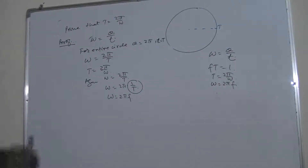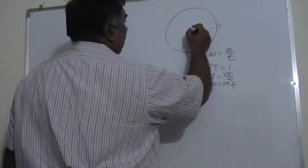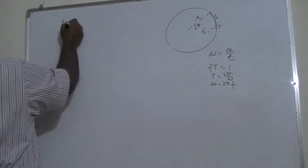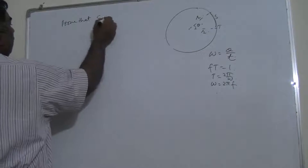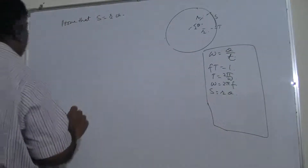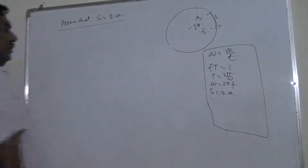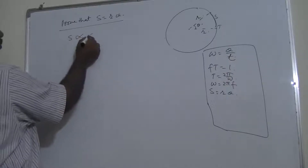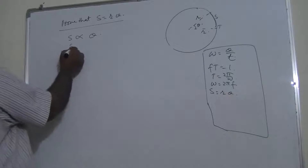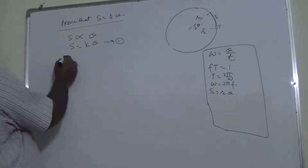Another formula examiners may ask you to prove is s equals rθ, where s is the arc length, r is the radius, and θ is the angular displacement. To prove this: if theta increases, s also increases, so s is directly proportional to theta. Therefore s equals k·theta for some proportionality constant k.